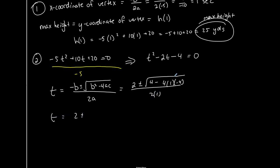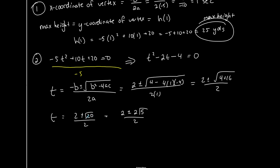So t equals the opposite of negative 2 — plus 2 — plus or minus the square root of negative 2 squared, which is 4, minus 4 times a (which is 1) times c (which is negative 4), all over 2 times 1. Simplifying: 4 plus 16 gives the square root of 20. So t equals 2 plus or minus the square root of 20, all over 2. The square root of 20 simplifies to 2 times the square root of 5. Everything is divisible by 2, so I get 1 plus or minus the square root of 5.